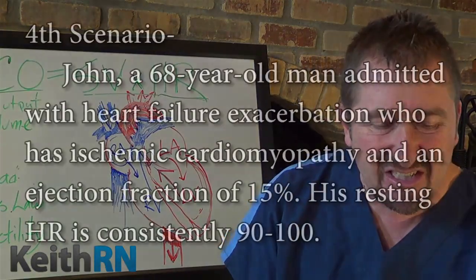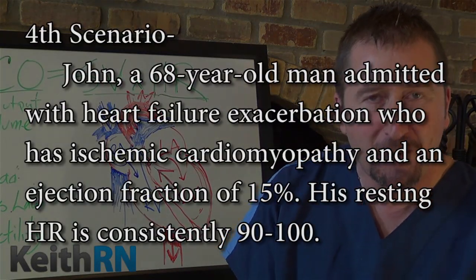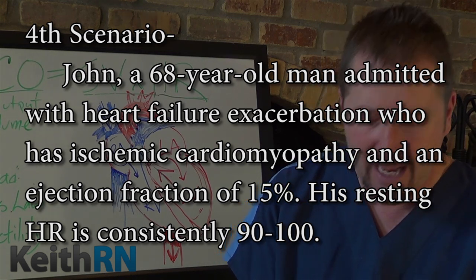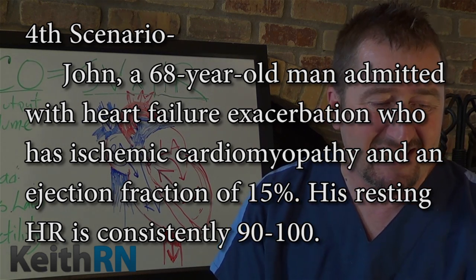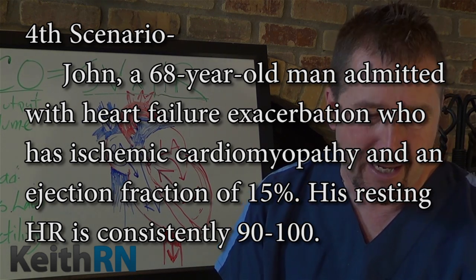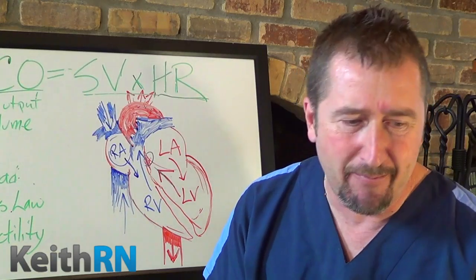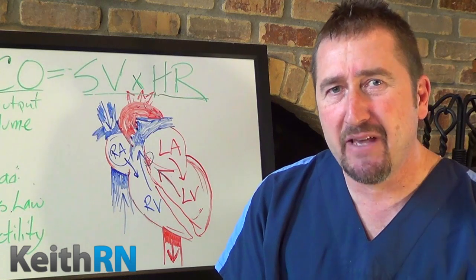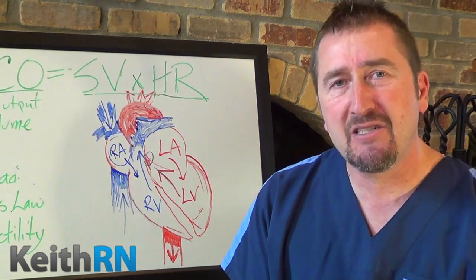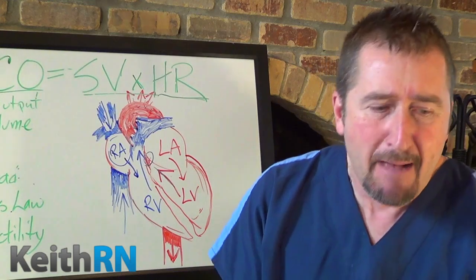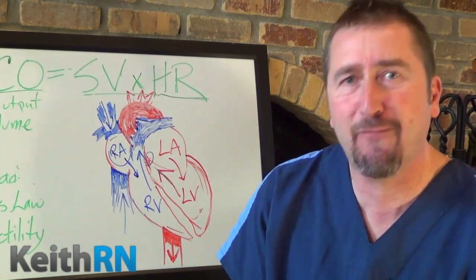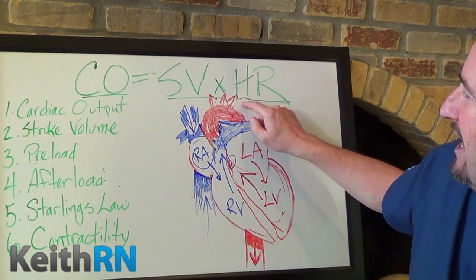And finally, number four: John, a 68-year-old man admitted with heart failure exacerbation who has ischemic cardiomyopathy and an ejection fraction of 15%. His resting heart rate is consistently 90 to 100. In order to clinically reason by recognizing relevant clinical data and grasp the essence of each scenario, the nurse must have applied knowledge of this essential pathophysiologic formula: CO equals SV times HR.